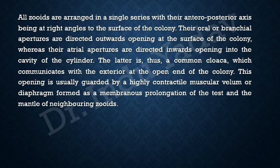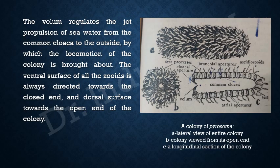This cavity forms a common cloaca, which communicates with the exterior at the open end of the colony. This opening is guarded by a highly contractile muscular velum or diaphragm, formed as a membranous prolongation of the test and mantle of the neighboring zooids. This text will become clearer once you see the diagram in the next slide.